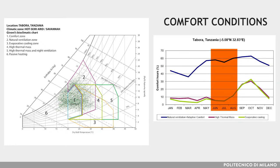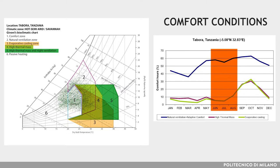From June to August and during the rainy season, it can be distinctly cool at night. So the use of high thermal mass and evaporative cooling helps during the hot months, as shown in the figures.